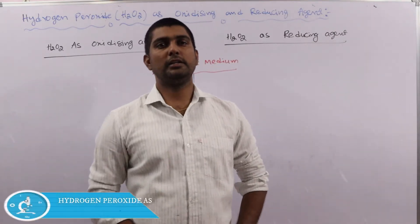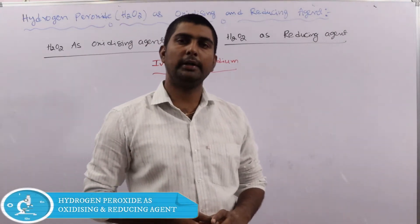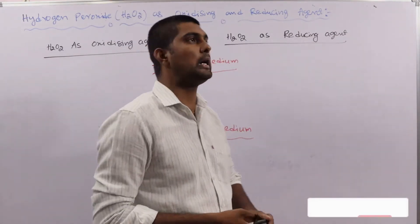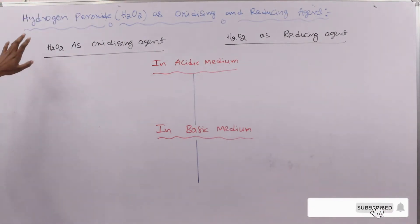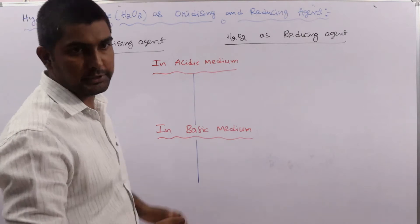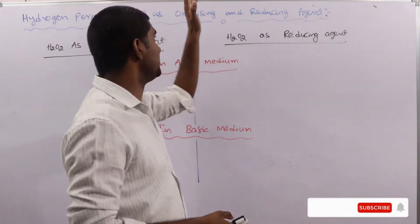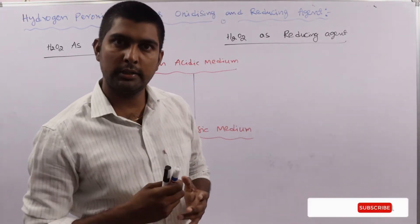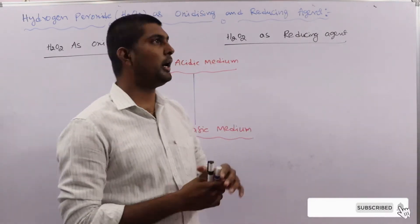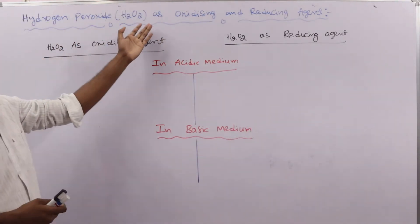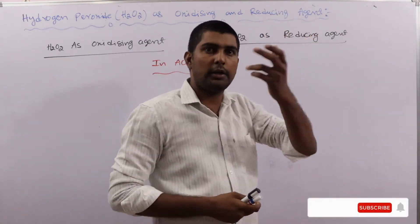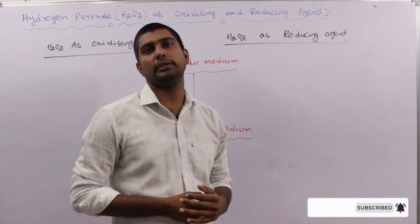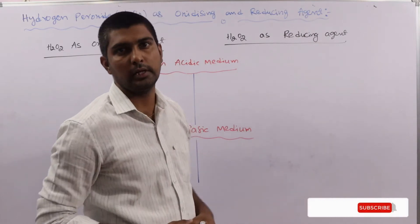Hello, in this lecture let us discuss one of the most important concepts for entrance exams IIT and NEET. Most frequently, questions are asked related to this concept. Hydrogen peroxide is a special molecule which can act as an oxidizing agent as well as a reducing agent. Generally, one molecule can act as either oxidizing or reducing agent, but H2O2 is special — it can act as both. Very, very important.